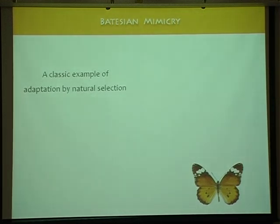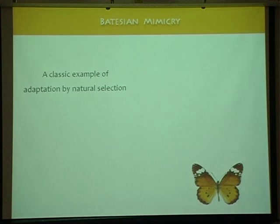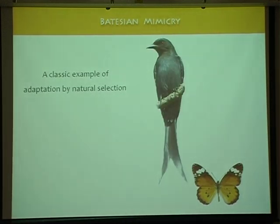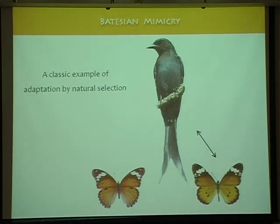Aposematism is when certain organisms become toxic and advertise their toxicity through prominent coloration, or chemical or acoustic signals that tell predators to avoid them. It is a classic example of adaptation by natural selection. The reason it is so attractive is that you know certain things very well about this system. You know what the selective peak — the adaptive peak — is. In this case, it's the toxic species that birds like a Drongo avoid eating once they have some experience. You know the selection pressure, the adaptive peak, and also the specific morphological features under selection.